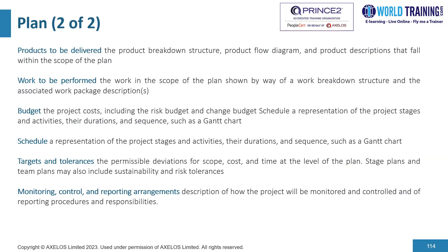There is a section on targets and tolerances, which provide a permissible deviation for scope, cost, and time at the level of the plan. Stage plans and team plans may also include sustainability and risk tolerances. Finally, there is a section on monitoring, controlling, and reporting arrangements, providing a description of how the project will be monitored and controlled, and of reporting procedures and responsibilities.